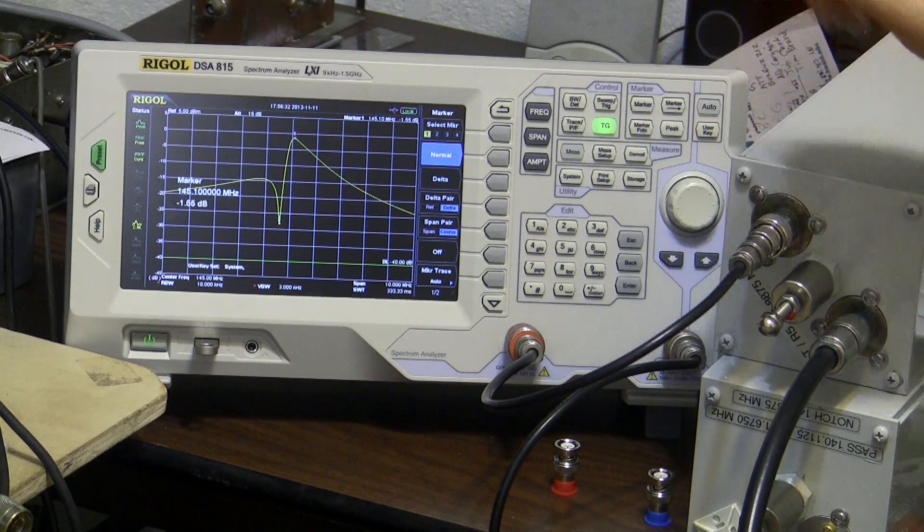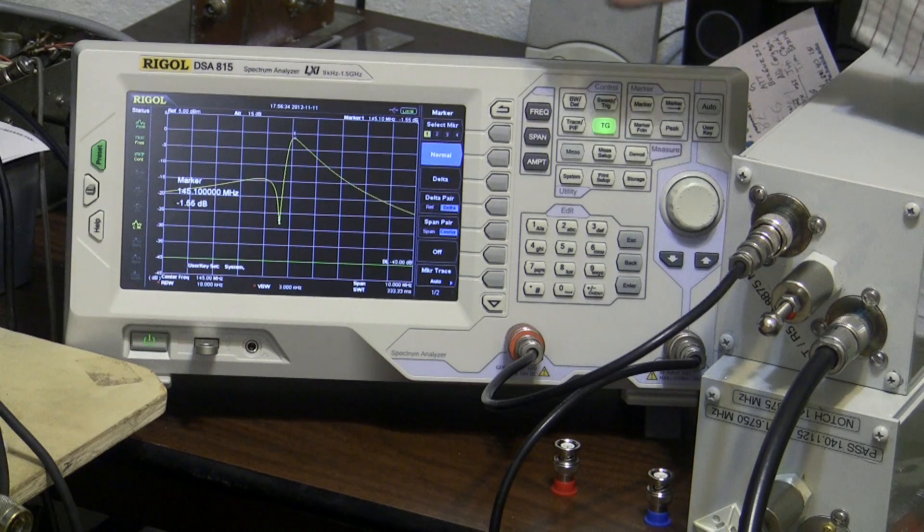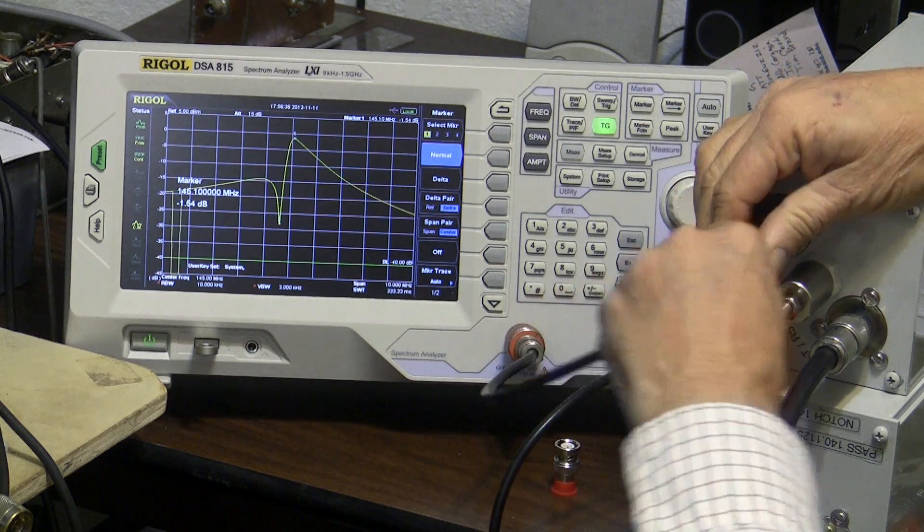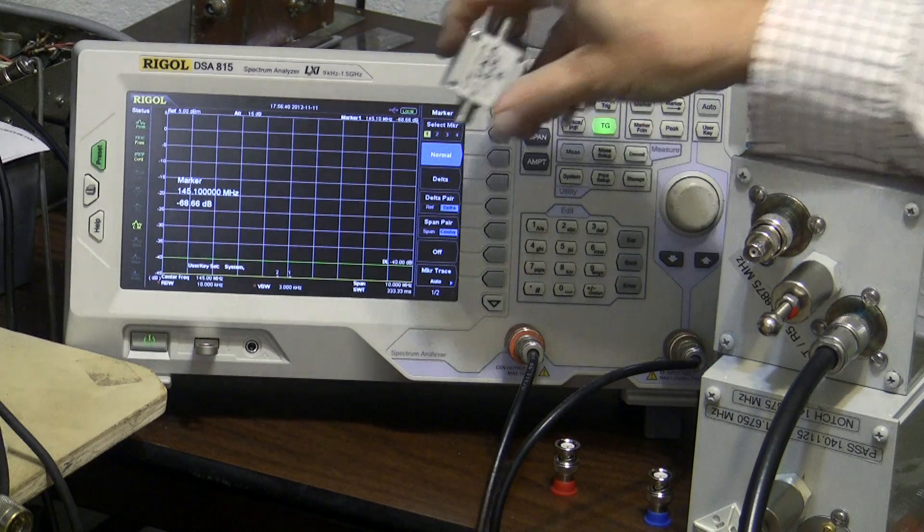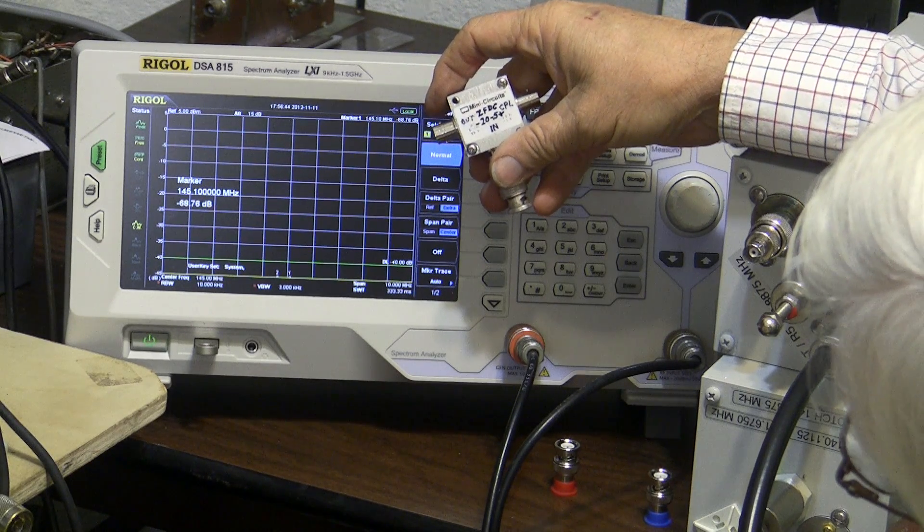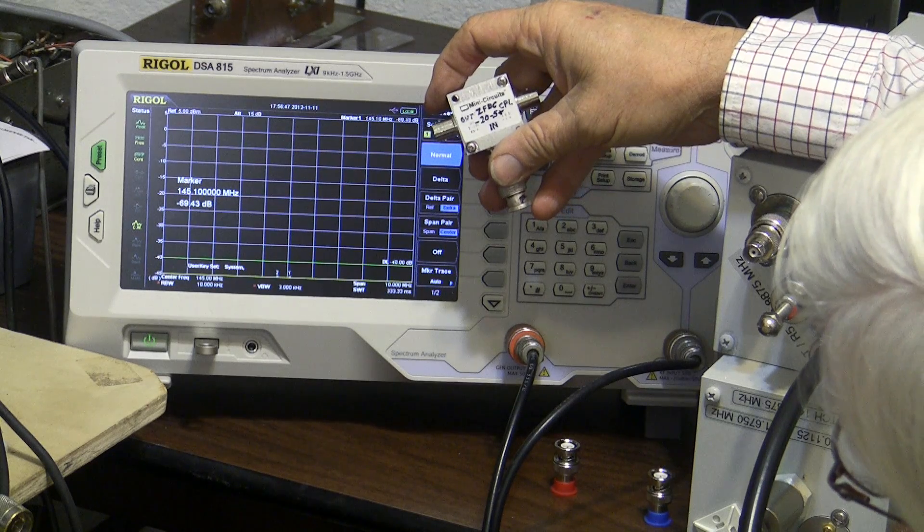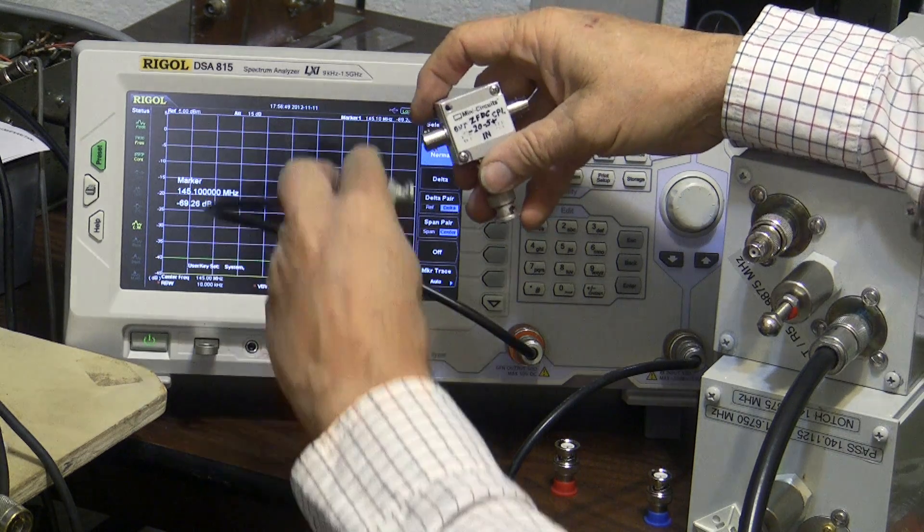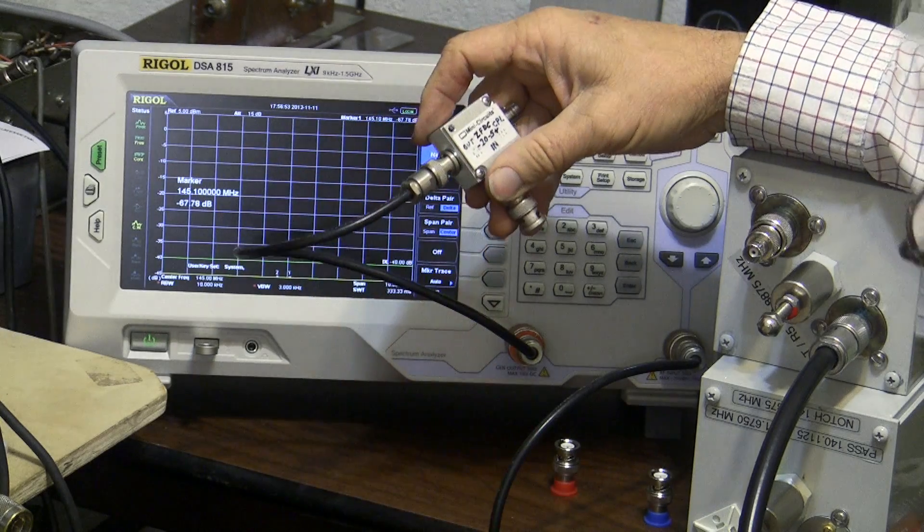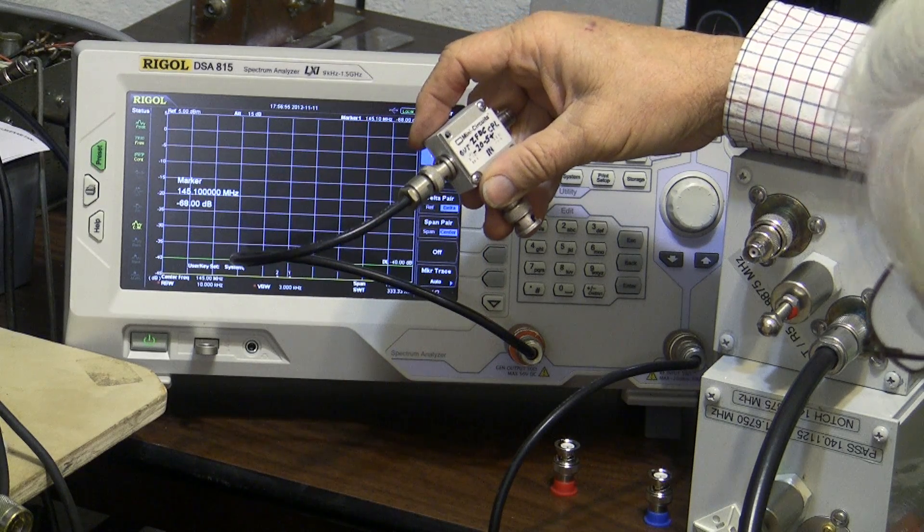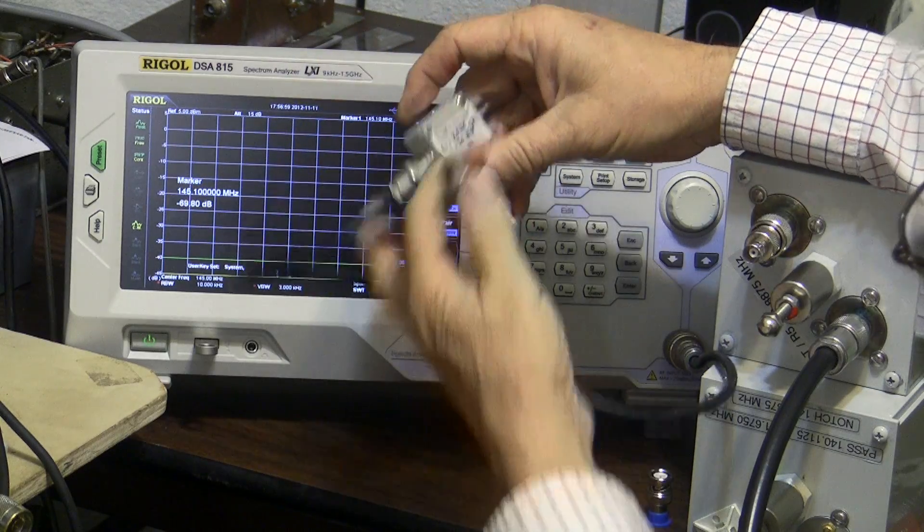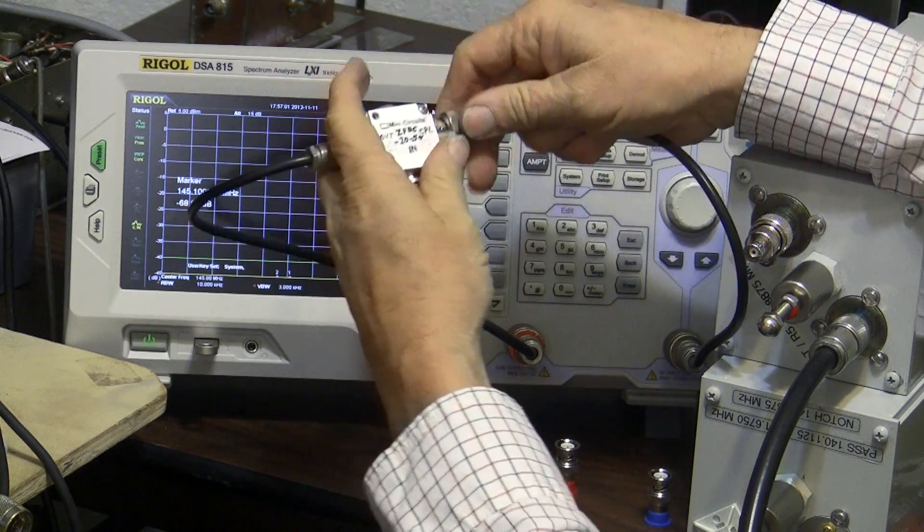So let's look at the match that this particular combination has. If we take this device, which is a ZFDC-20-5, we take the output of the tracking generator and put it on this port, and we take the input to the spectrum analyzer and put it on the coupling port.